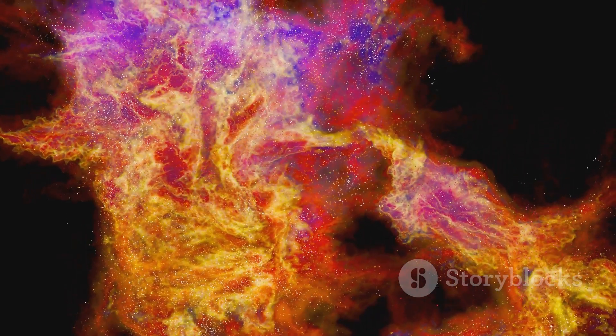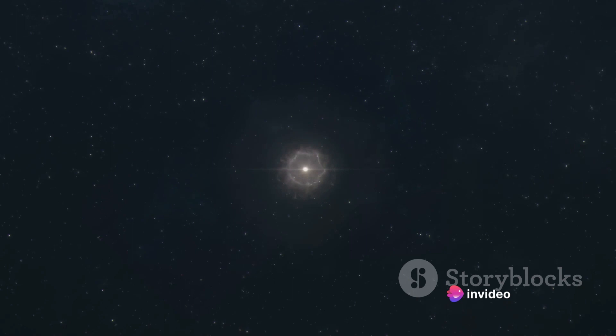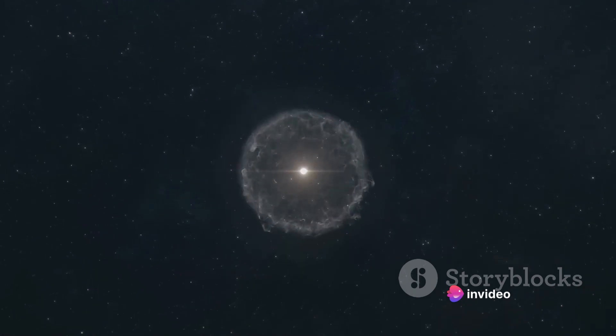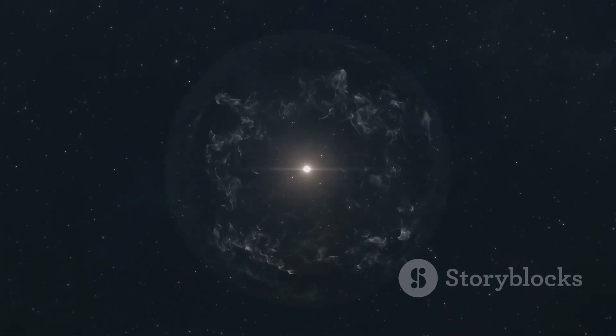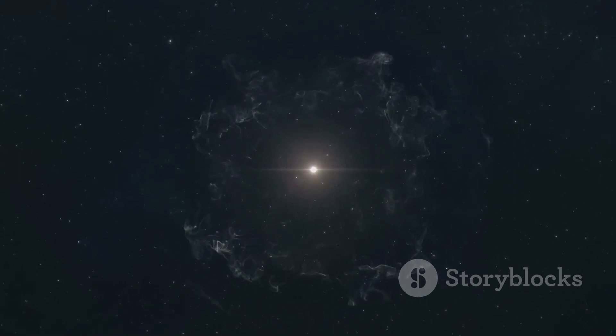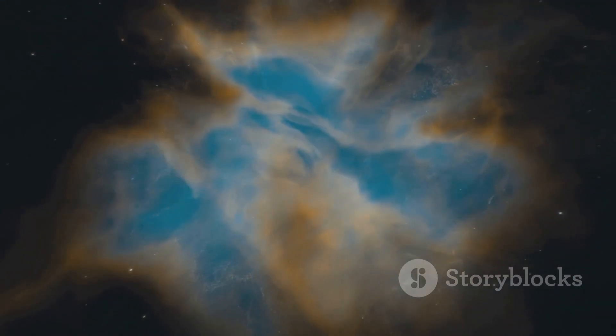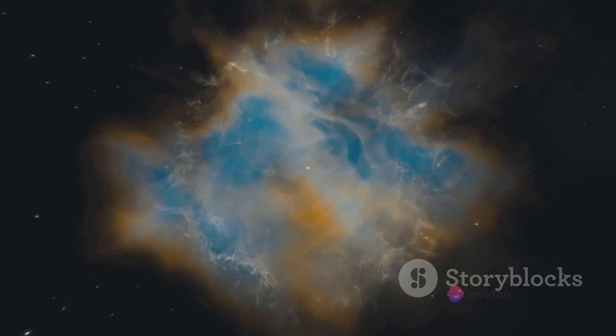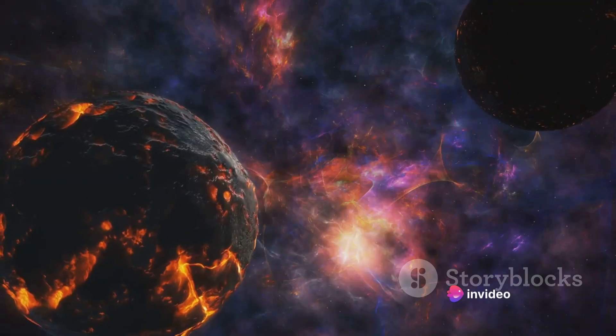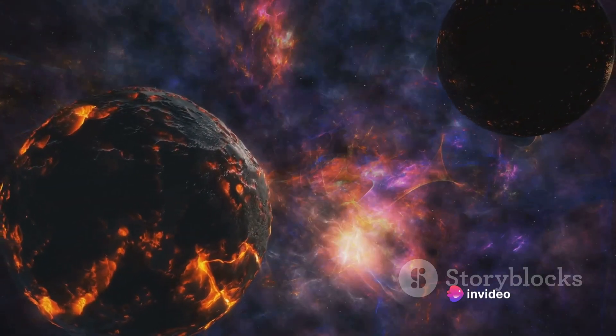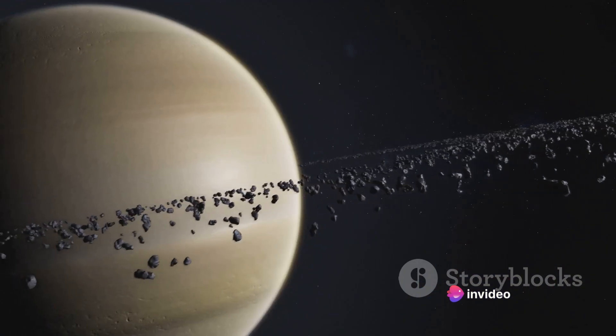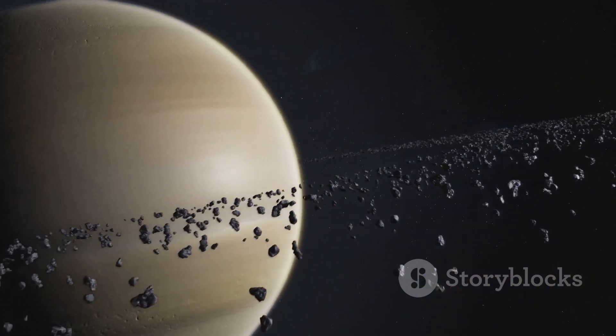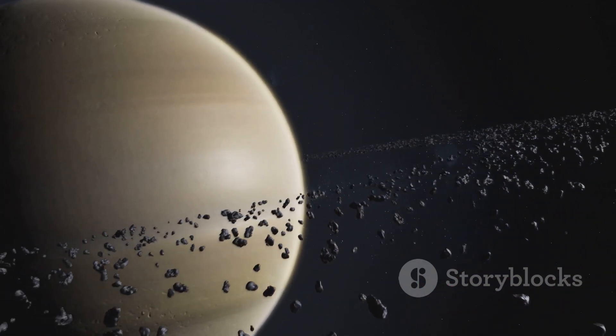As the fabric of this cloud condenses under the relentless grip of gravity, a star is born, illuminating the surrounding darkness with its nascent light. Around this newly formed star, remnants of the nebulous cloud begin to coalesce. Dust particles collide, sticking together to form planetesimals. Over time, these planetesimals grow larger, their increased gravity pulling in more and more material.